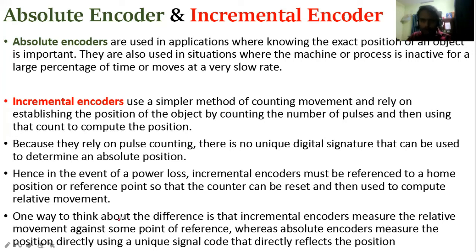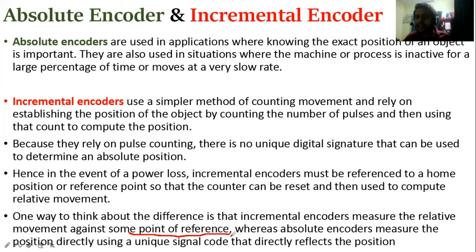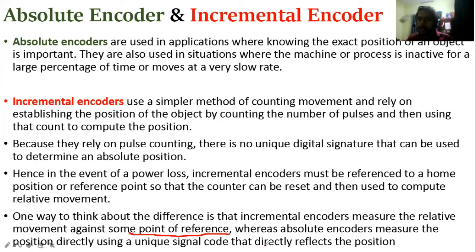One way to think about the difference: incremental encoders measure the relative movement against a reference point. Absolute encoders, in contrast, measure the position directly using a unique signal code — a binary code — that represents the position even after a power loss.